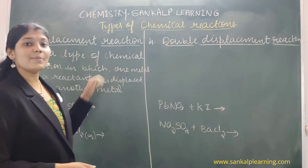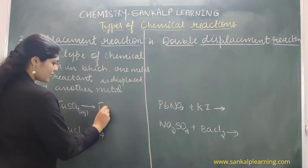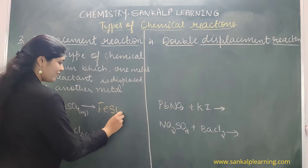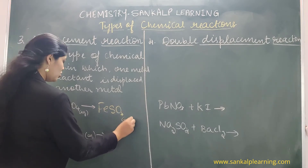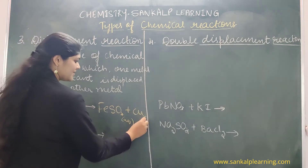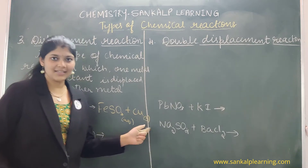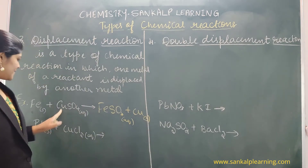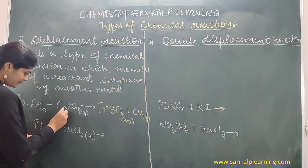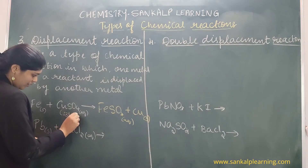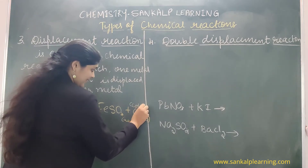It is this displacement reaction because of which the products are formed. There is formation of ferrous sulfate, FeSO4 (aqueous), and copper comes out as a solid. Ferrous sulfate is colorless, whereas copper sulfate was blue colored. So the blue color becomes colorless.